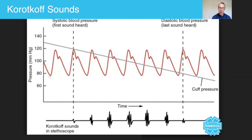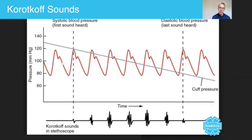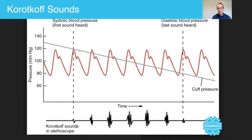Just because you're not hearing it doesn't mean it's not occurring. As you let the air out of the cuff, the valves continue to open and close, and the blood continues to be turbulent. As you can see, it's constant — it's always there. This line represents the pressure inside the cuff, and you've started off at about 130 according to this image. Then as you release the air and release the pressure, you start to hear the Korotkoff sounds.